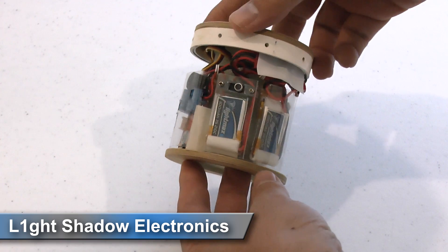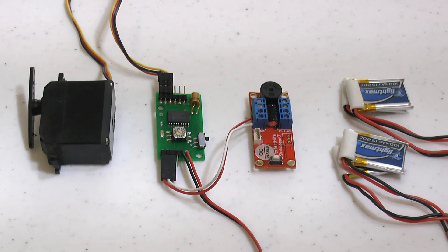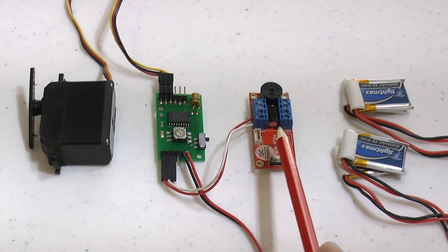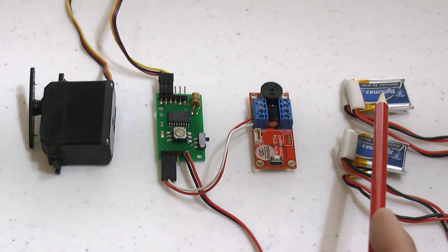Before flying the new electronics on Light Shadow we wanted to first test fly it to make sure it worked. The deployment electronics consists of the PerfectFlight Stratologger CF altimeter, our servo timer 2 and a couple of batteries.